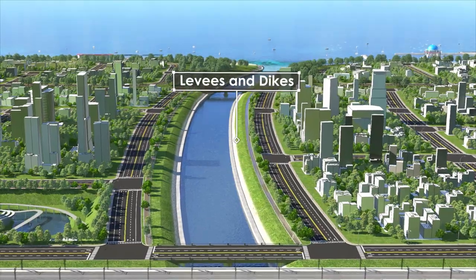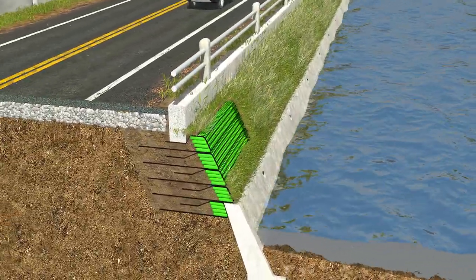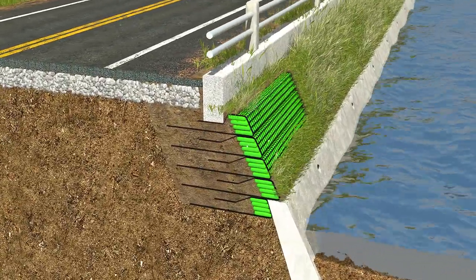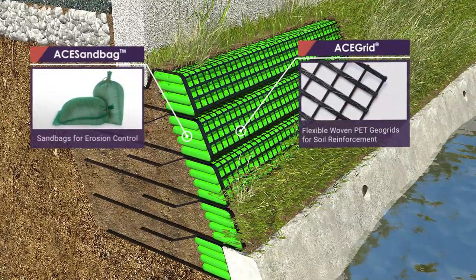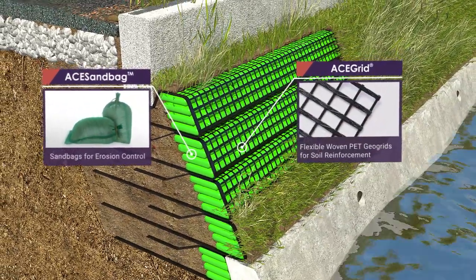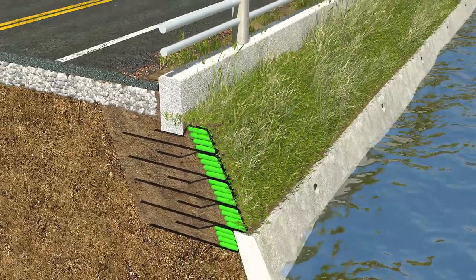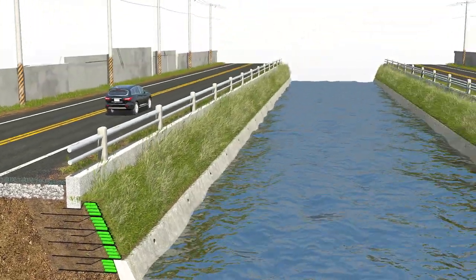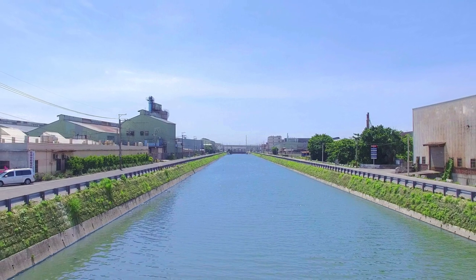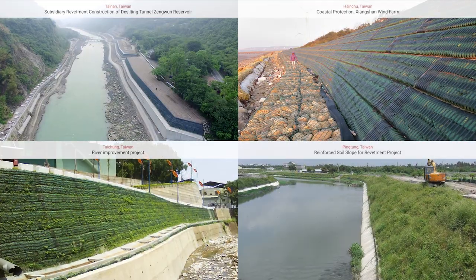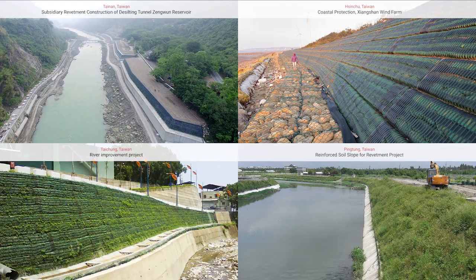Levees and Dykes: ACE Riverbank Protection Composite System aggregates different techniques, utilizing concrete structure for the watershed area and ACE-Grid reinforced earth embankment above the flood level. The reinforced earth embankment could be built using in-situ material and be planted with vegetation, greatly reducing cost and carbon footprint.